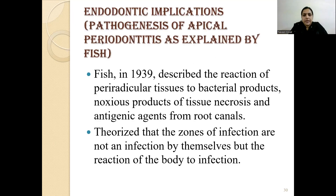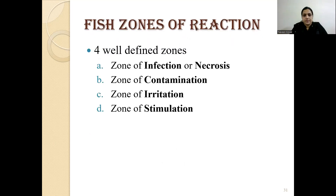Coming to the pathogenesis of apical periodontitis, the Fish study was conducted by Fish in 1939. He described four zones present in the periradicular tissue, explaining the reaction of periradicular tissues to bacterial products, noxious products of tissue necrosis, and antigenic agents from root canals. These zones are not infections themselves but represent the body's reaction to the infection. The four zones are: zone of infection (necrosis), zone of contamination, zone of irritation, and zone of stimulation.